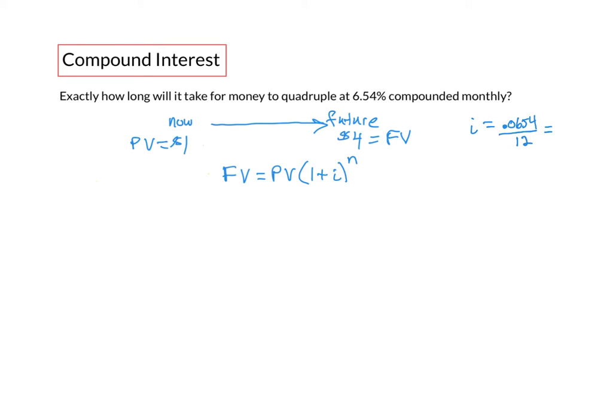which when we divide it out would equal decimal 0.00545. n would equal the number of years it takes and I'll use the variable m here times the compounding frequency, so times 12, which we can write as 12 times m like so.